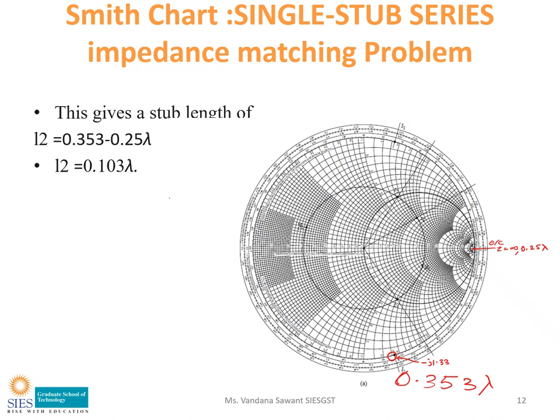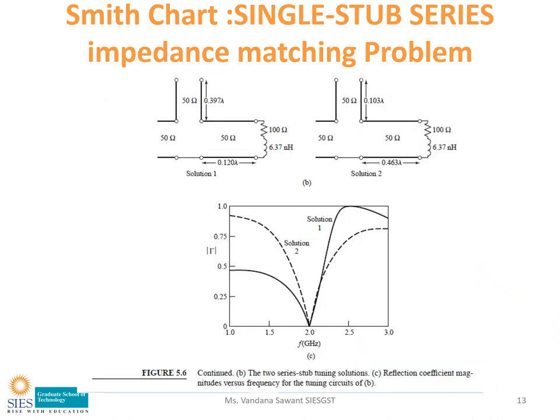In this way, we can find out two possible positions and lengths of the series stub — solution 1 with D1 equals 0.120 lambda and L1 equals 0.397 lambda, and solution 2 with D2 equals 0.463 lambda and L2 equals 0.103 lambda. Two solutions are possible for both shunt stub and series stub single stub impedance matching. Thank you.